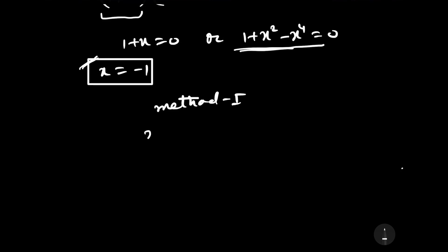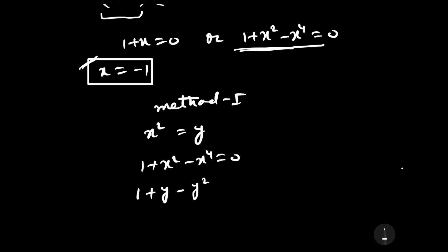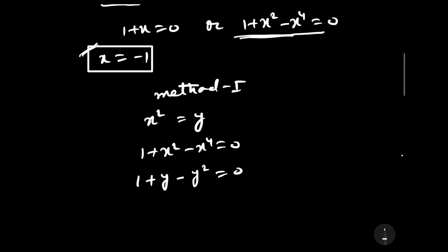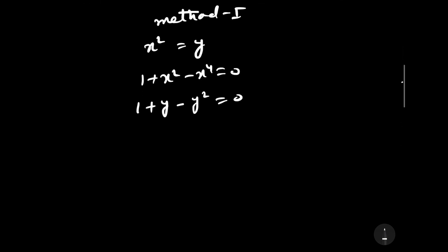Let us assume x squared equals y. Then we can rewrite 1 plus x squared minus x to the power 4 equals 0 as 1 plus y minus y squared equals 0, which can be rearranged as y squared minus y minus 1 equals 0.